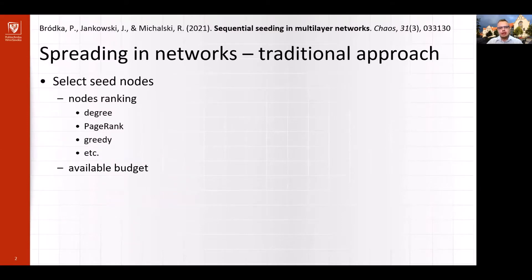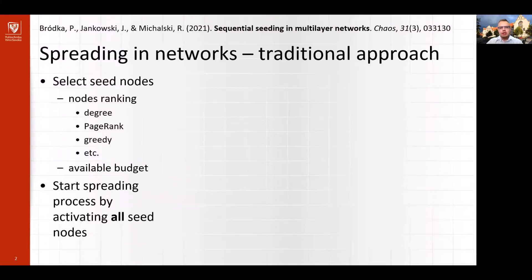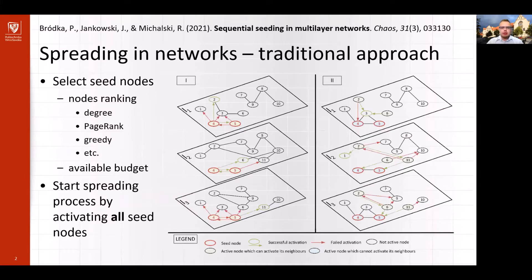In the next final step, we activate all seed nodes and observe the spreading process. In our toy example, we have budget to convince two social media users to our product, and we select them based on the degree. Thus, in this case, we activate nodes 4 and 5, since they have the highest value of degree measure, and we start the spreading process simulated with the independent cascade model.